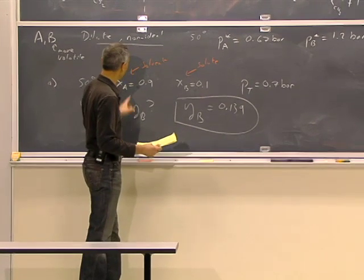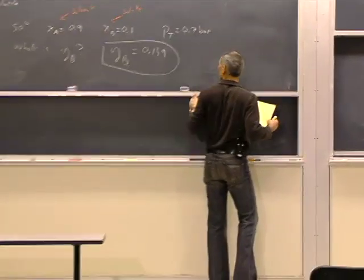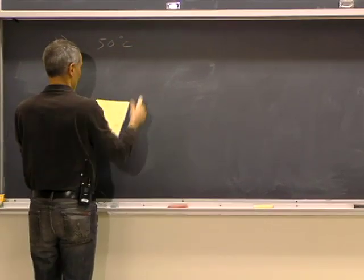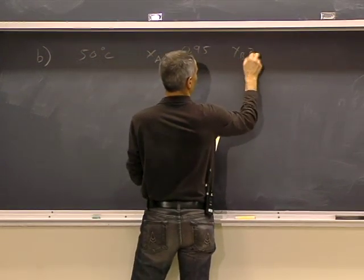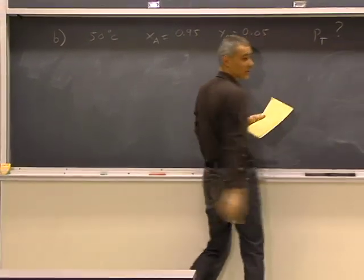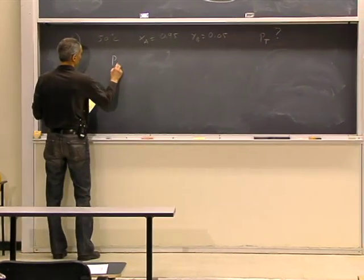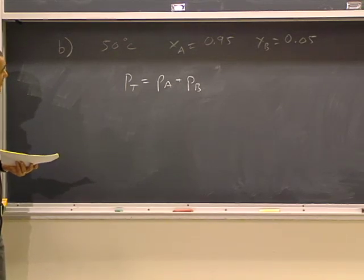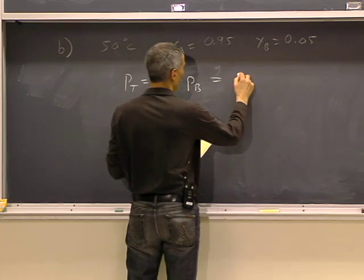For part B, we're still at 50 degrees Celsius, and we change the mole fraction of A to 0.95 and the mole fraction of B to 0.05. We want to know: what is P total now? We expect P total to be the sum of the partial pressures of A and B. A is the solvent, B is the solute — it's a dilute, non-ideal solution.